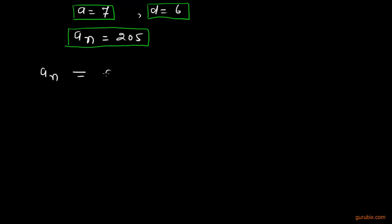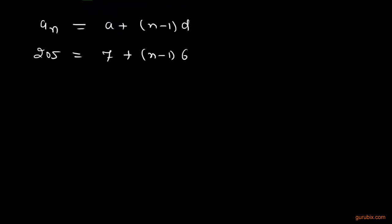The general term is AN equals A plus N minus 1 times D. AN is 205, A is 7, N is not known yet, and D is 6.